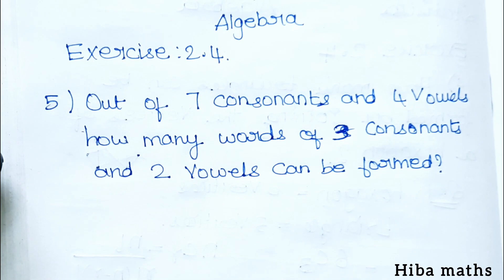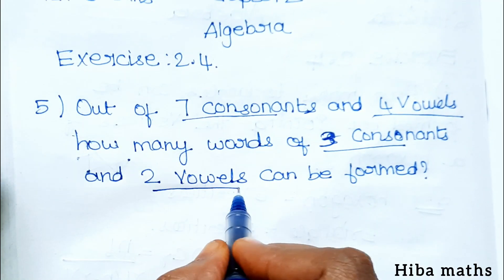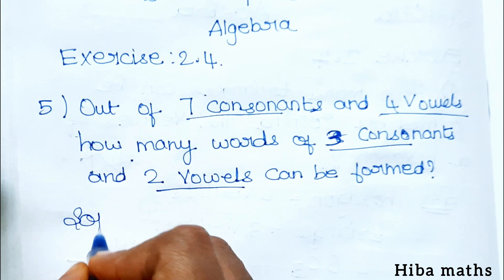Question understand. 7 consonants and 3 consonants, 4 vowels and 2 vowels can be formed.